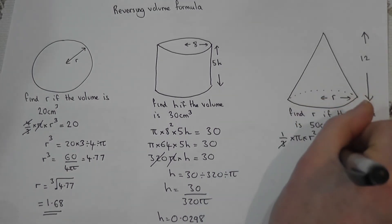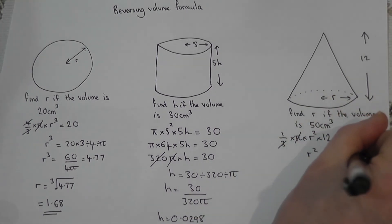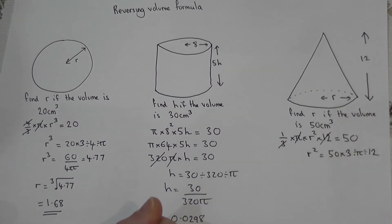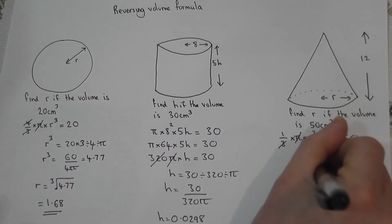So I can first of all times by 3, then I can divide by pi, and then divide by 12.